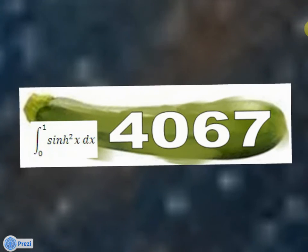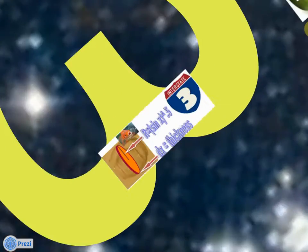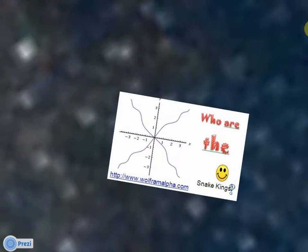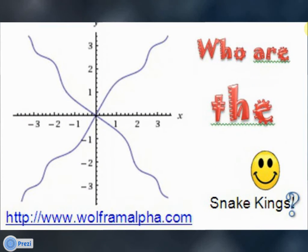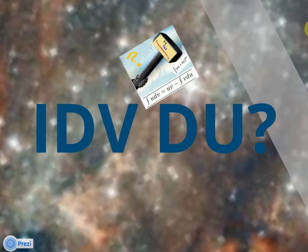Consider the enigma of the zucchini integral. Goal! Three. Would you name your goldfish Root 3? Who are the Snake Kings? IDV, do you?